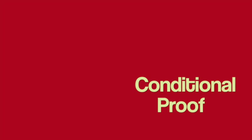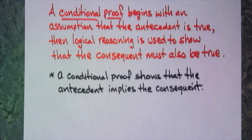The second type of proof is a conditional proof. Here's the definition: A conditional proof begins with an assumption that the antecedent is true, then logical reasoning is used to show that the consequent must also be true. In other words, a conditional proof shows that the antecedent implies the consequent. The only difference between this and a direct proof is I'm making that assumption - I'm assuming something's true and then I'm going to show that I get something else.